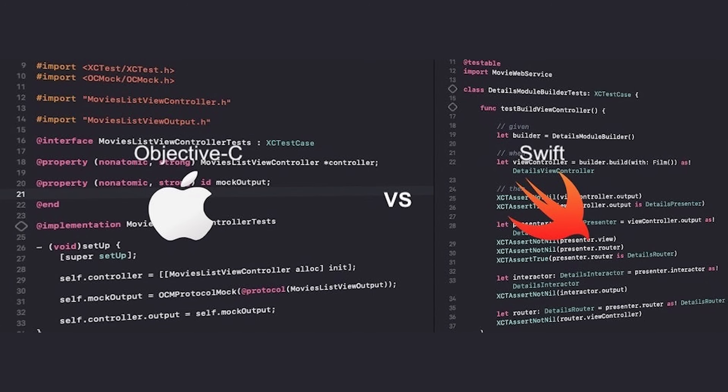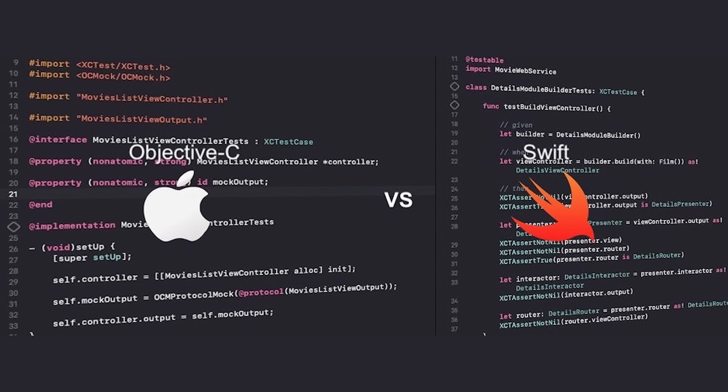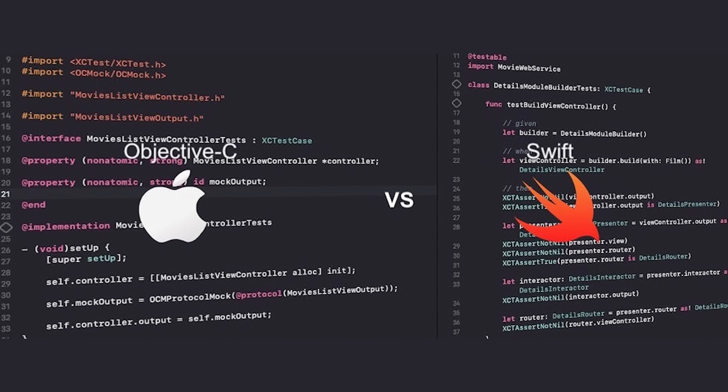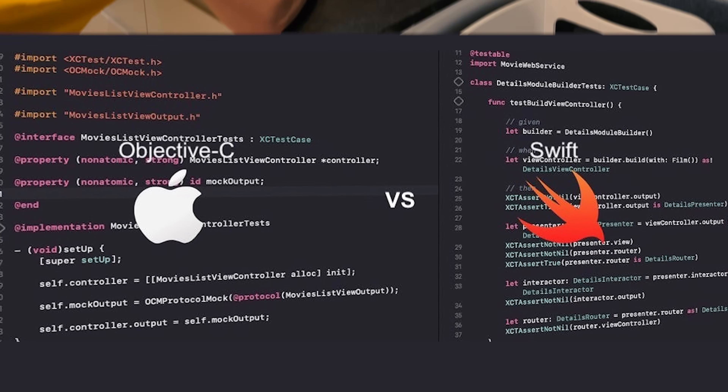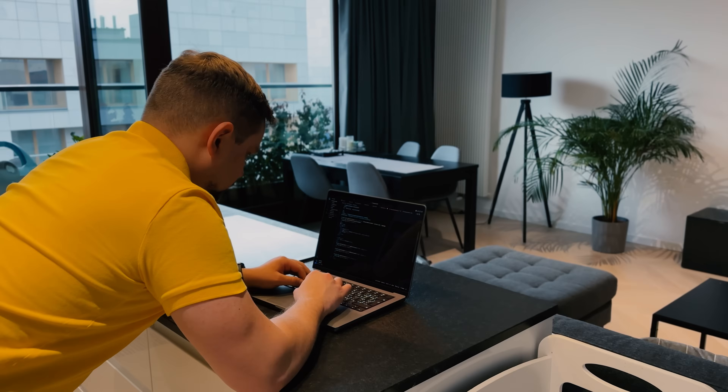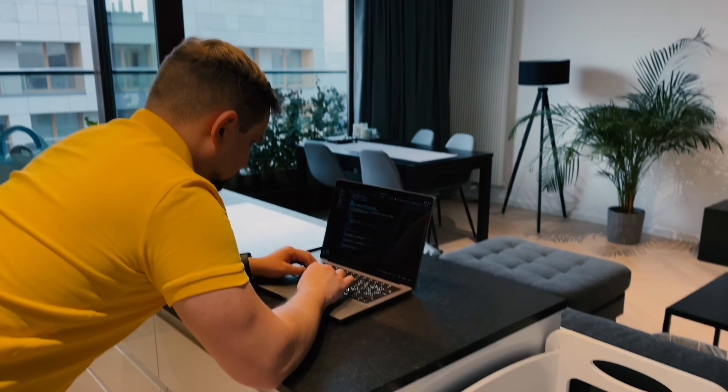There's also Objective-C, an older language for iOS development. While it's not as popular now, knowing a bit of Objective-C can be helpful, especially if you end up working on older apps or with a team that uses it. But to get started, focus on Swift.